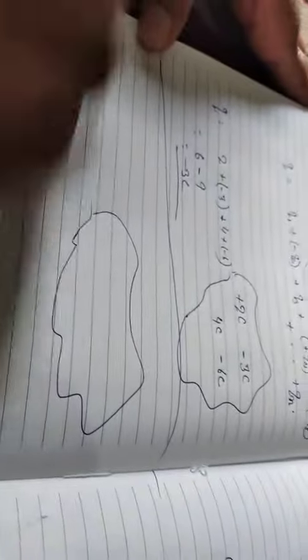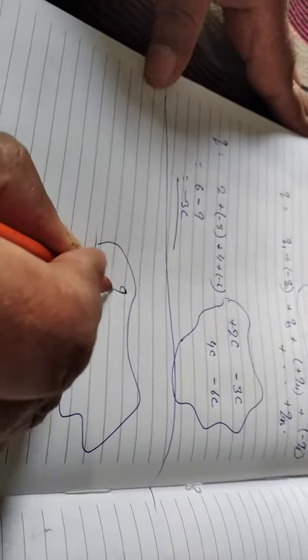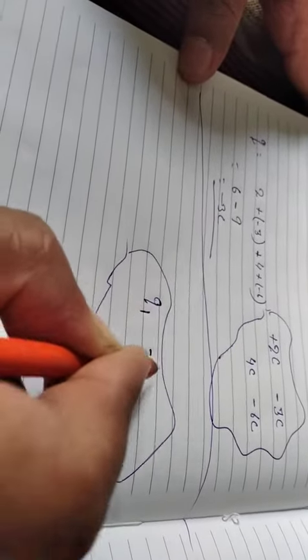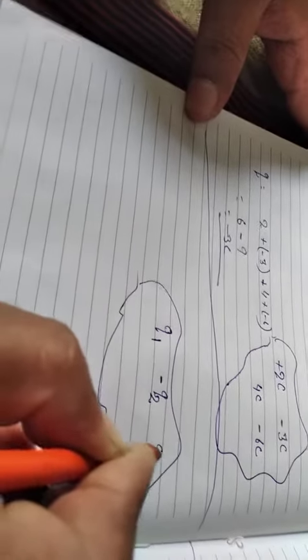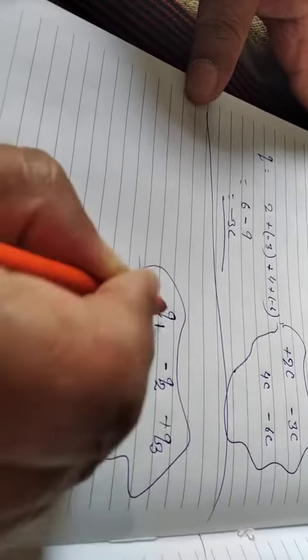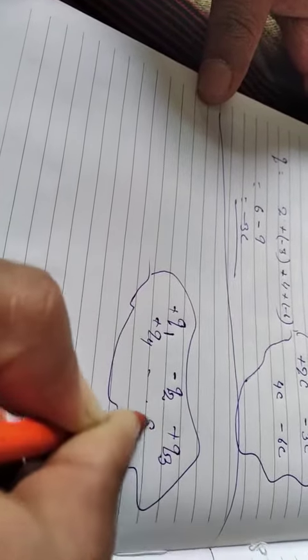Charge is a scalar quantity and a scalar follows simple laws of algebra. Now let us see. Suppose we have an object containing n different types of positive and negative charges: q1, minus q2, q3, q4, dot dot dot qn.